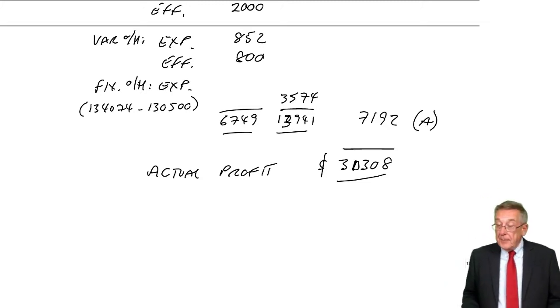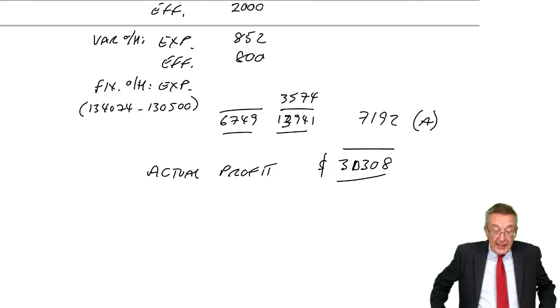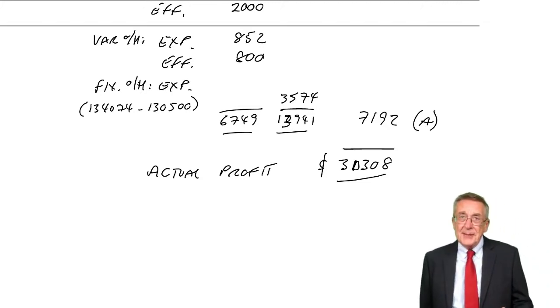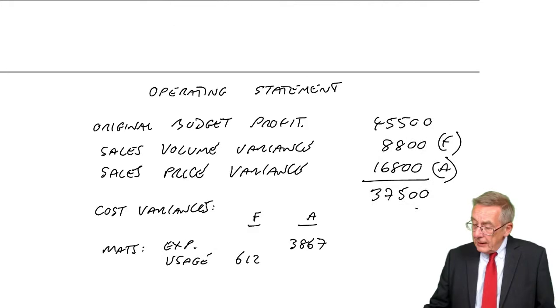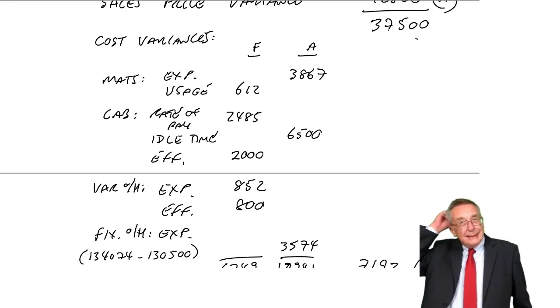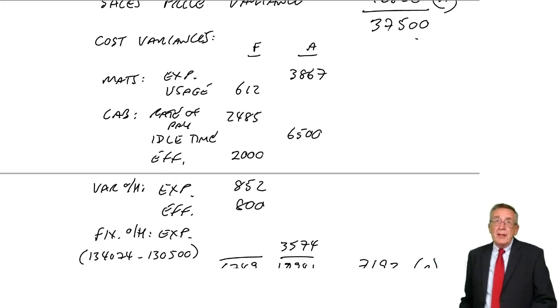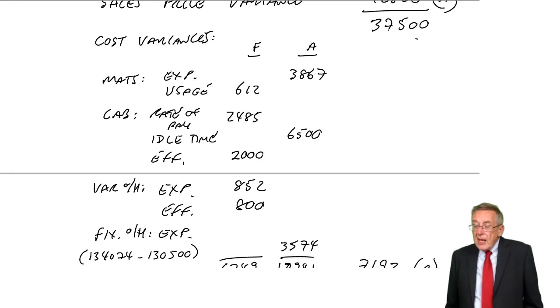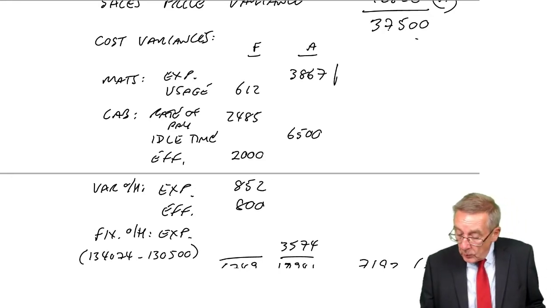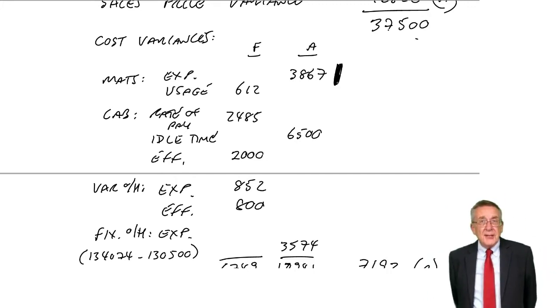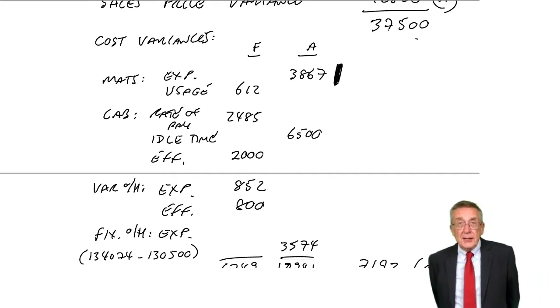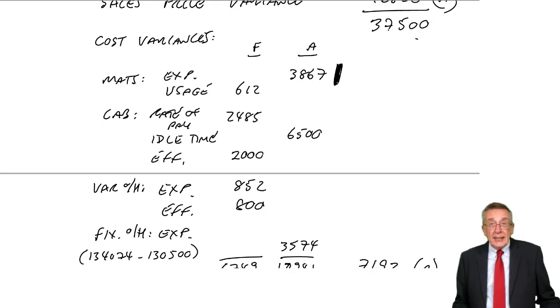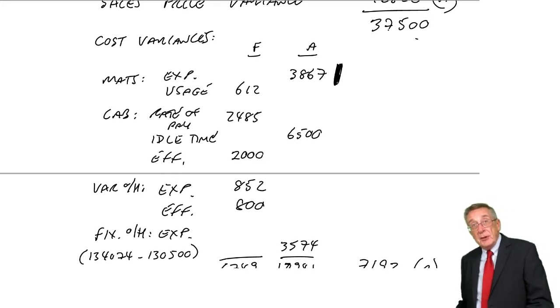Alright there is one last thing, no more numbers though. But it's paragraph 6 example 5, the interpretation of variances. So no more numbers but you can be asked questions to check you understand the relevance, the importance of them. You see, we've done all those variances, we know what went wrong and management will want to investigate. You see normally this is done monthly. And if we find at the end of January, materials expenditure adverse, we've overspent 3,867, we'll want to know why because if something's gone wrong in January, maybe hopefully we can correct the problem and perhaps not overspend in February and March and so on.